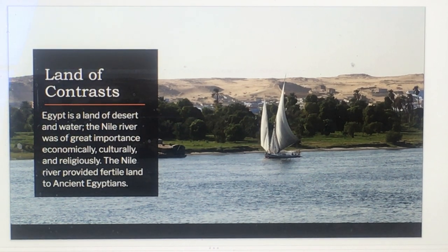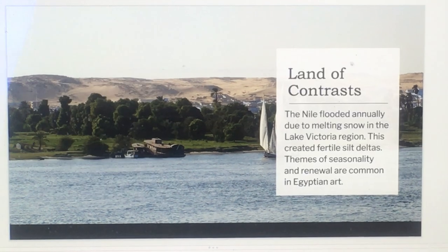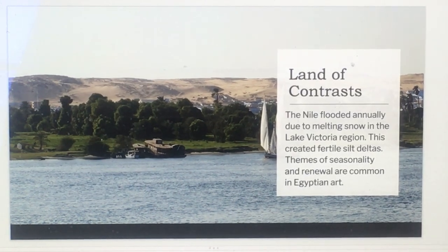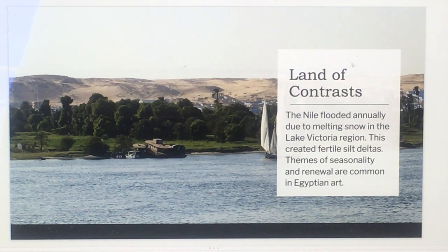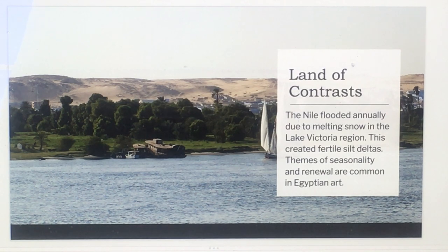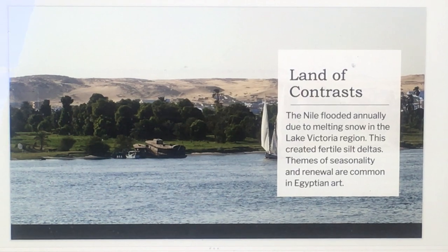The Nile provided land to the ancient Egyptians. It flooded annually due to melting snow in the Lake Victoria region of Africa, and this created very fertile deltas. The themes in art are a lot about seasons and renewal — that's very common.